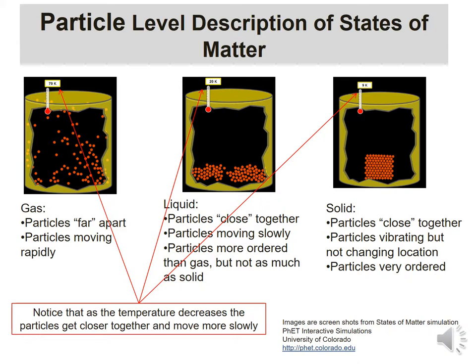If you look at the temperatures at the top, for the gas I have it at 70 Kelvin. The middle one is down to 20 Kelvin — so I've cooled it down. You'll find that some molecules or atoms are actually coalescing a little bit; they're getting together. There must be some sort of attraction between those particles, so when I slow them down enough, they can take advantage of that, and that's where we get a liquid. The particles are pretty close together, move more slowly, and are more ordered.